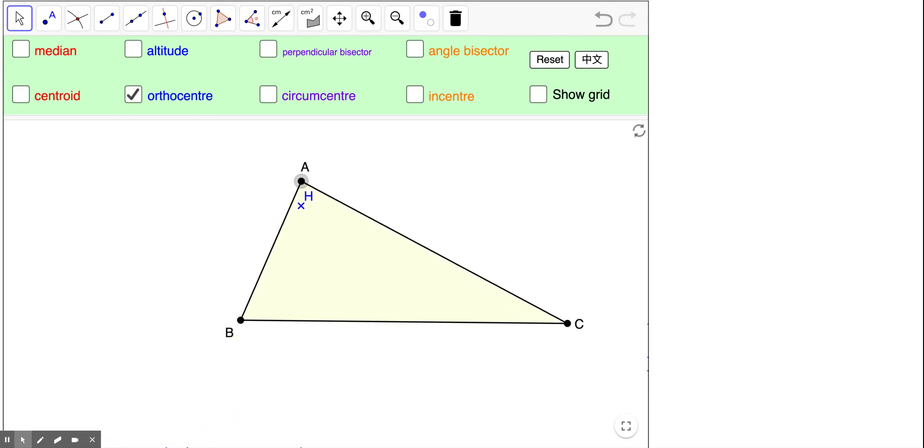Other than this kind of change, you can also see that if you move it a little bit, when this one, A here, moves to the middle of B and C, then the orthocenter will also lie beyond the triangle, like this.